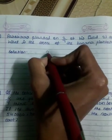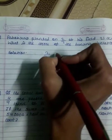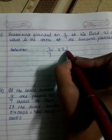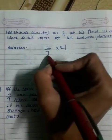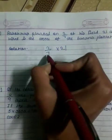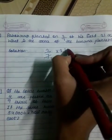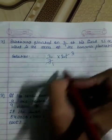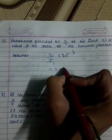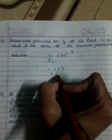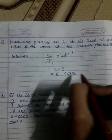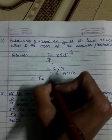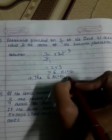So we simply write 2 upon 7 into 21. Now 7 is in the denominator and 21 is in the numerator, so they divide each other — 21 divided by 7 is 3. What remains is 2 into 3. So 2 into 3 is 6. Therefore 6 acres is used for banana plantation.